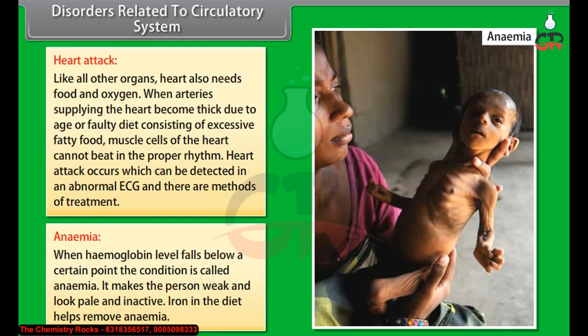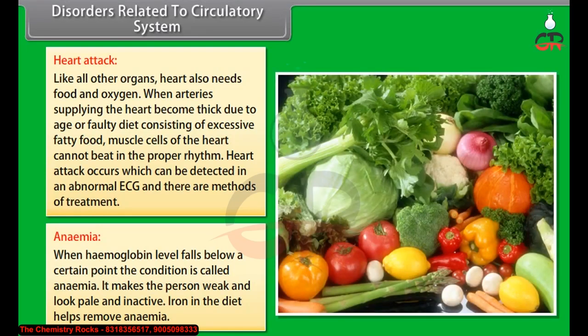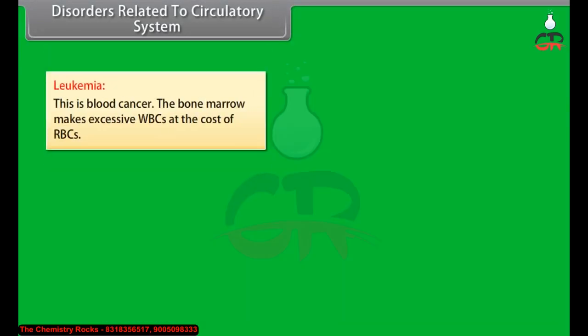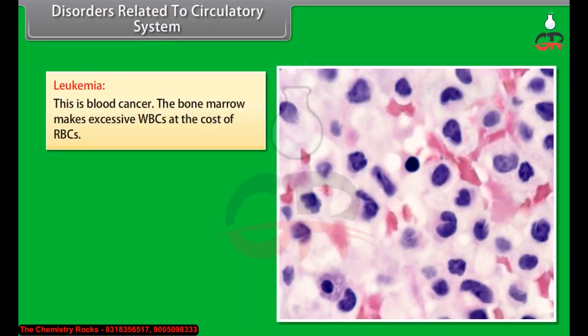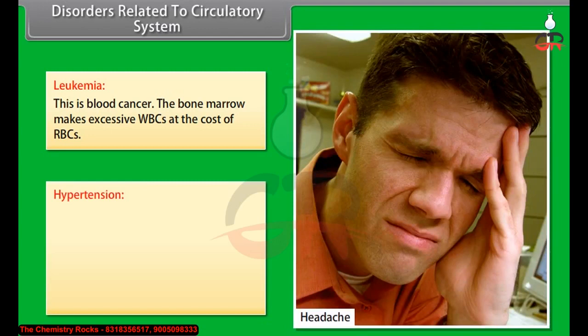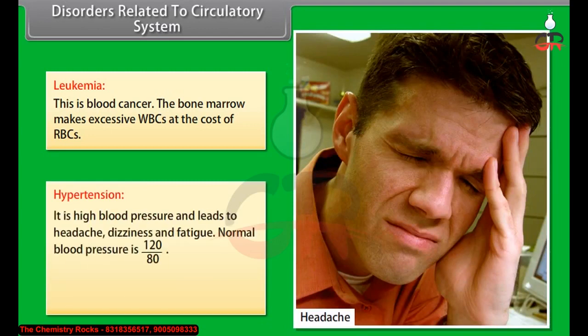Leukemia is blood cancer in which the bone marrow makes excessive WBCs at the cost of RBCs. Hypertension leads to headache, dizziness and fatigue. Normal blood pressure is 120/80. High blood pressure can also be caused by anxiety.